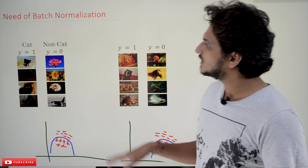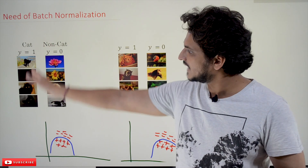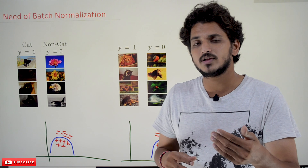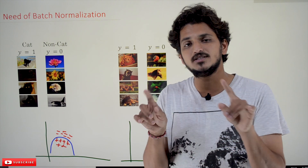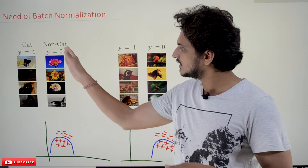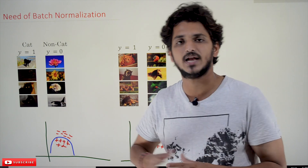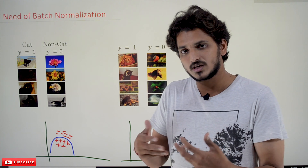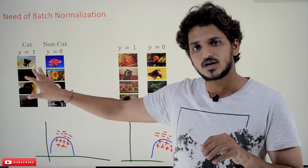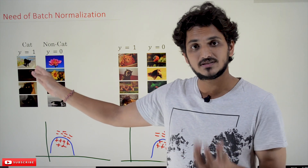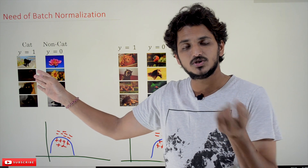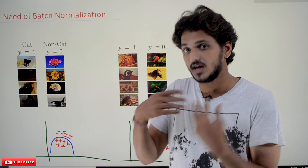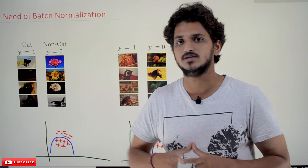The example we consider here is a dataset of cat images and non-cat images. We are defining a neural network where the goal is to identify cat images. If the image consists of a cat, that is taken as positive classification; if it does not contain a cat, it is taken as negative classification. So the dataset we consider here is binary class classification. The input given to our neural network is the image pixel values, taken as 0 to 255.